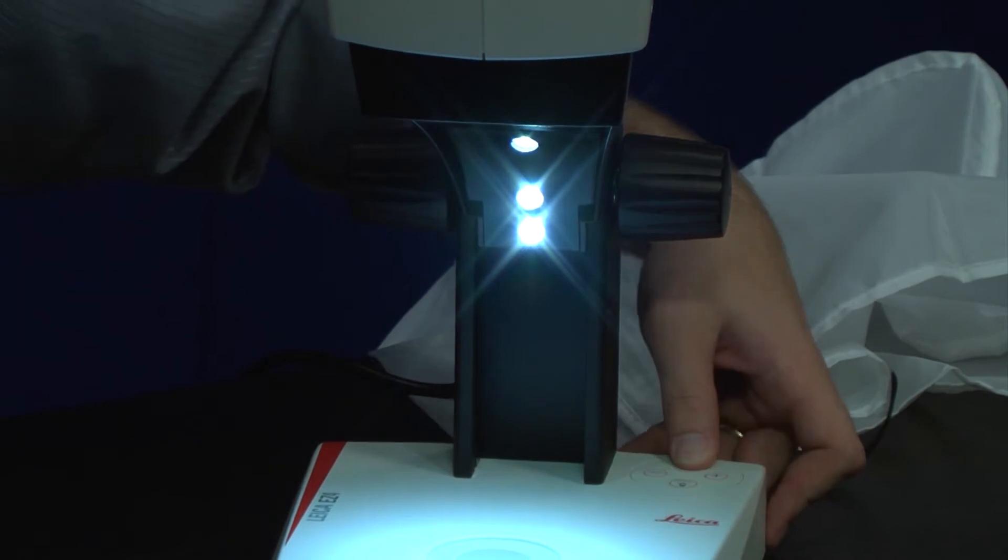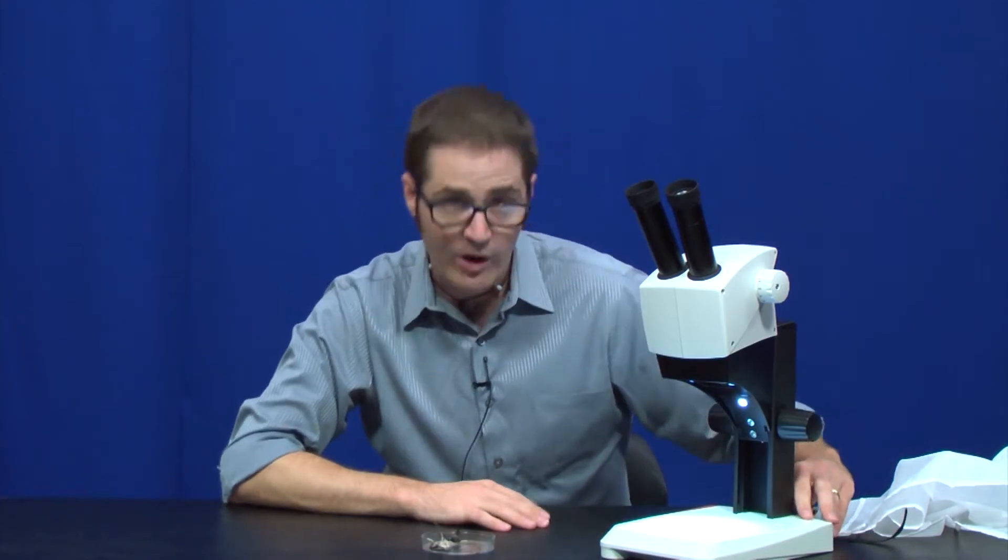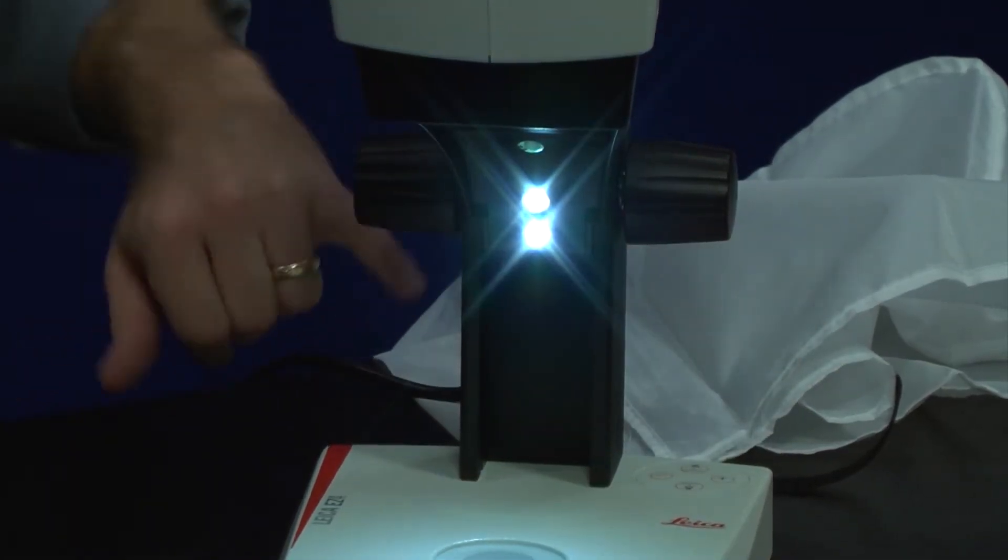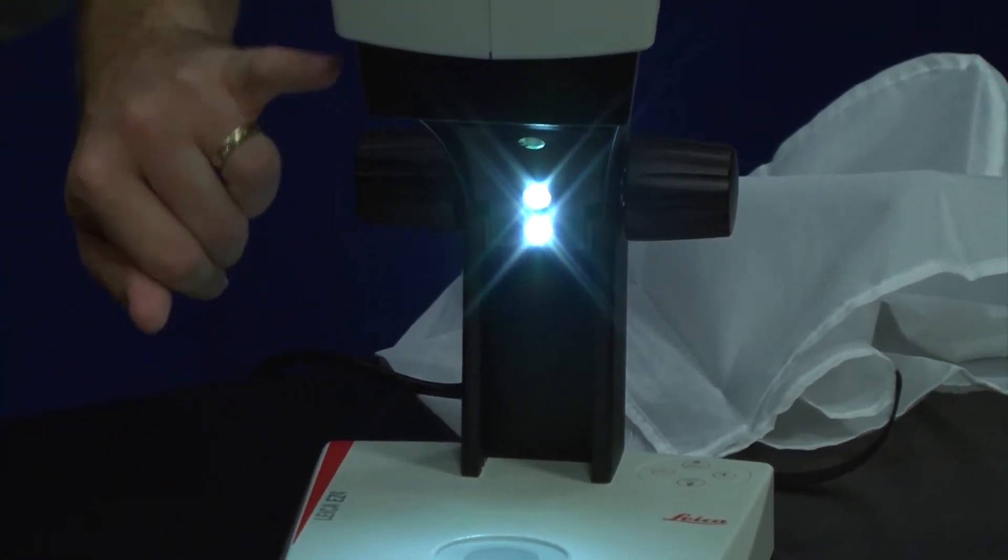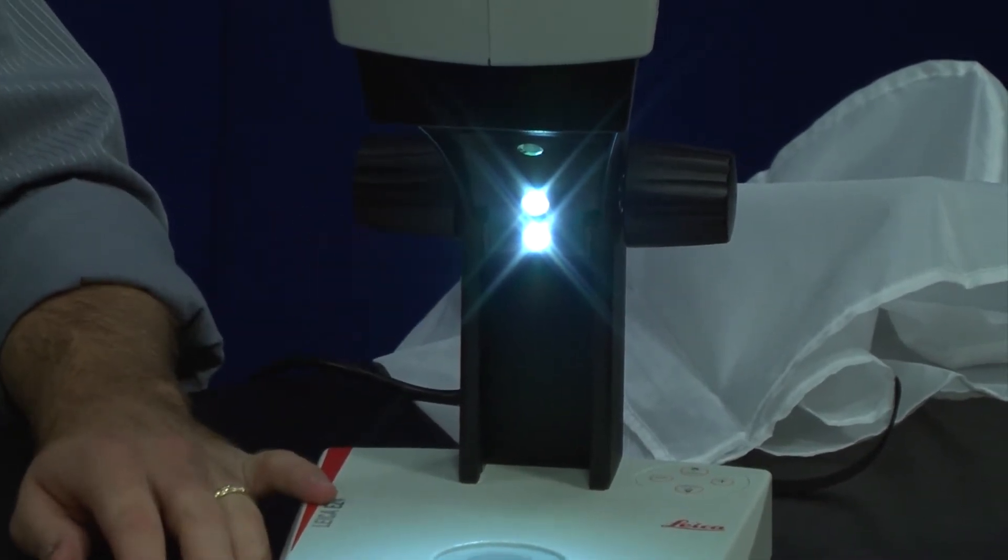When I hit the button the second time, it's going to turn off the bottom two LEDs. That's going to give us a really nice top-down illumination without casting any shadows from the back. And then if we're looking at maybe a smoother surface or a rock, for example, we can hit the button a third time and we're going to turn off those upper three LEDs and turn on the bottom two, giving us a little bit of an angled light that really shows surface defects, scratches, and topography very nicely. If I hit it one more time, that'll turn the light off entirely.